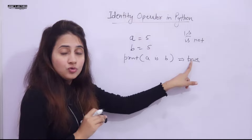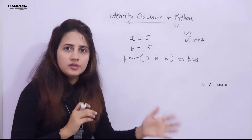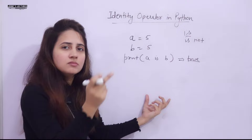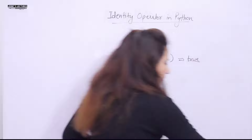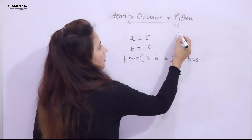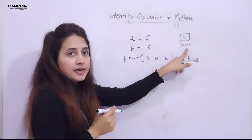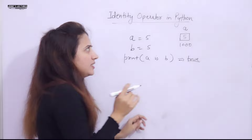Each object has a memory address, and you can call it the object ID. When we write `a = 5`, some memory is allocated — say address 1000 — and the value 5 is stored there as an object. The variable `a` is just a name or tag for that object.